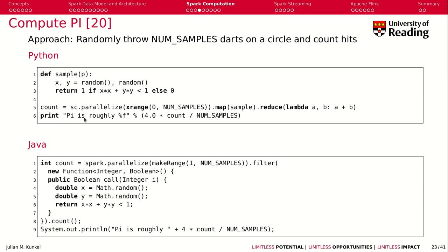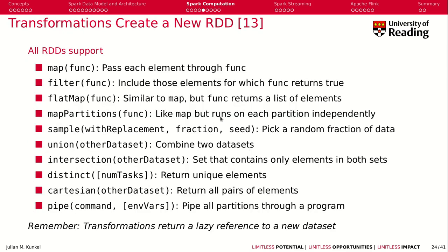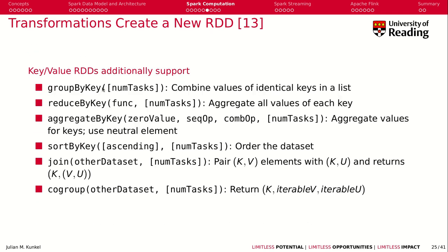There are many transformations you can perform to create a new RDD. A transformation returns a lazy reference to a new dataset and does not apply the function yet. RDD supports many operations, including map, filter, and the pipe operation, which pipes partition data through an external program — allowing you to connect arbitrary programs with a Spark program.